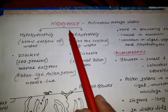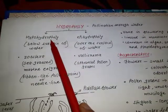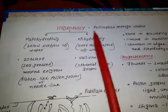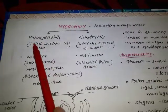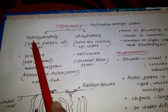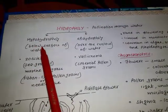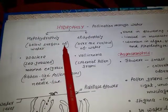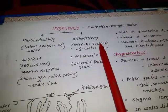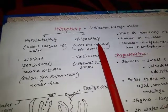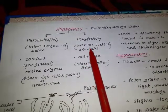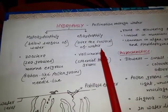Hydrophily is of two types: hypohydrophily and epihydrophily. As the name indicates, in hypohydrophily the pollination takes place below the surface of water, and in epihydrophily pollination takes place over the surface of water.